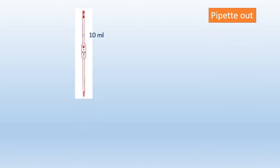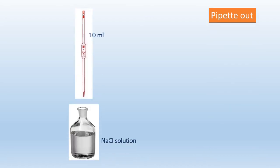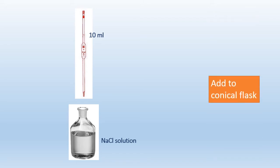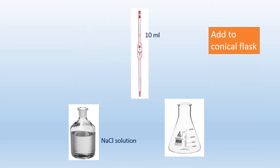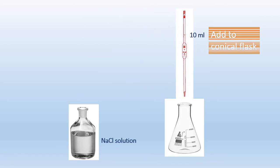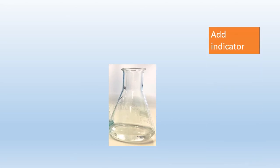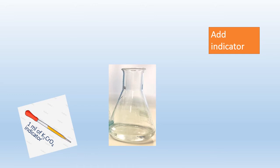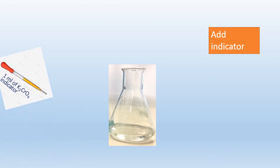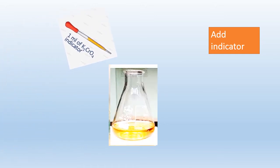Pipette out 10 ml of NaCl solution into the conical flask. Now add the indicator — 1 ml of potassium chromate indicator. On adding that, the solution turns yellow in color.